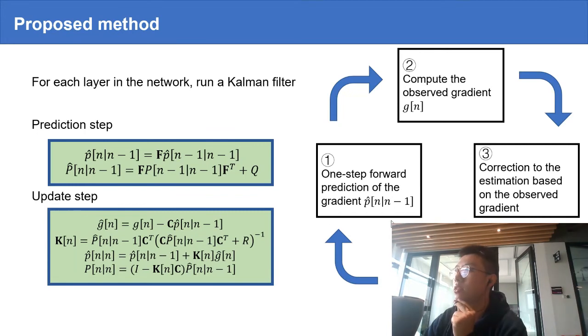Here, we can see that our method consists of four steps: one-step forward prediction, compute the observed gradient, correct estimation based on the observed gradient, and take the gradient descent as we normally do.